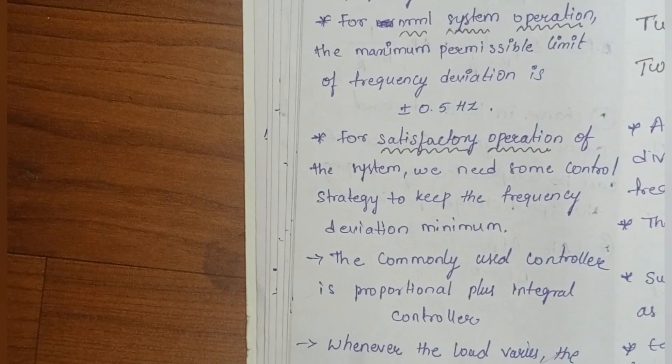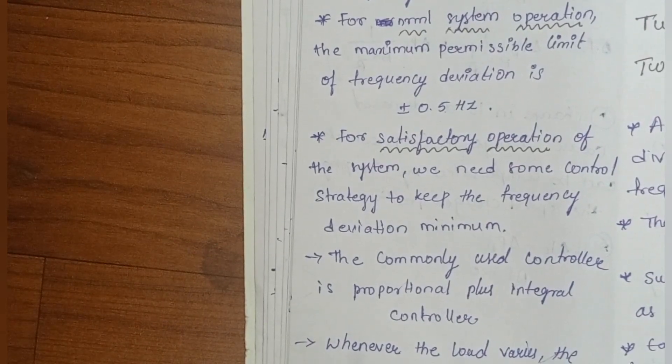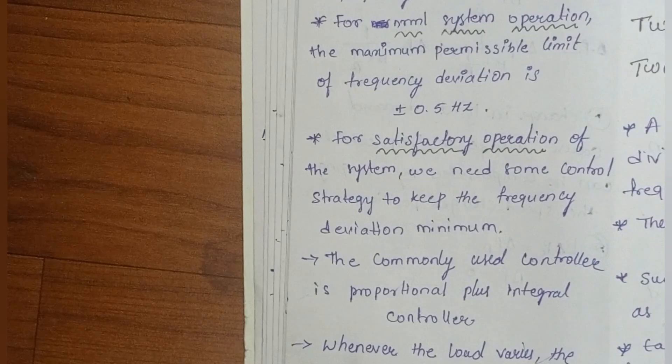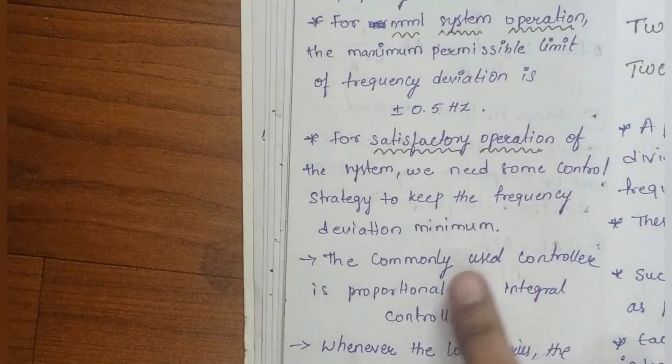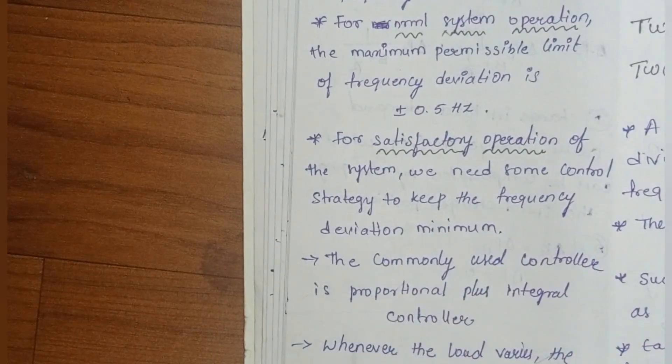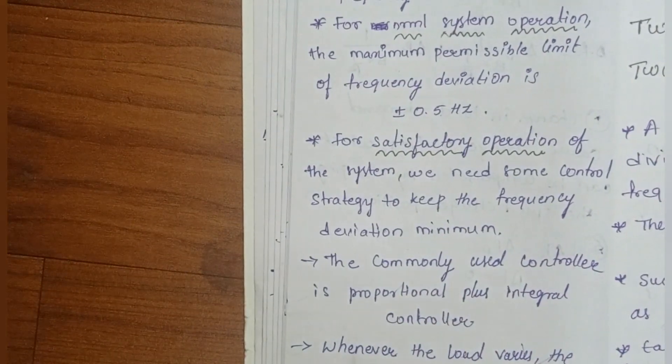For satisfactory operation of the system, we need some control strategy. The commonly used controller is proportional plus integral controller. This is the PI controller to keep the frequency deviation minimum.